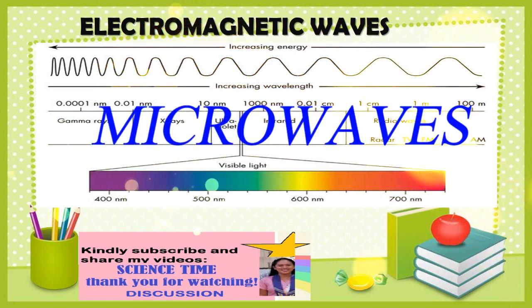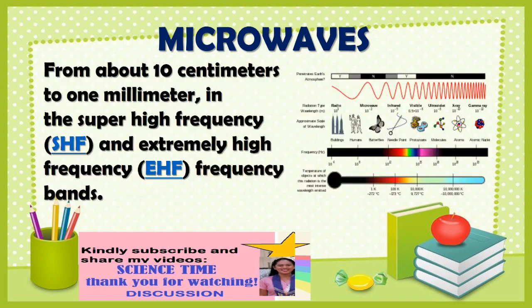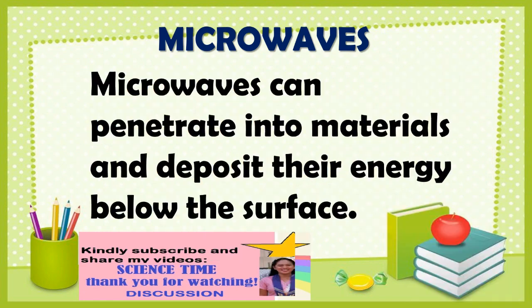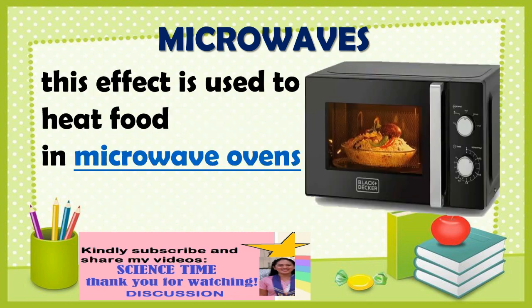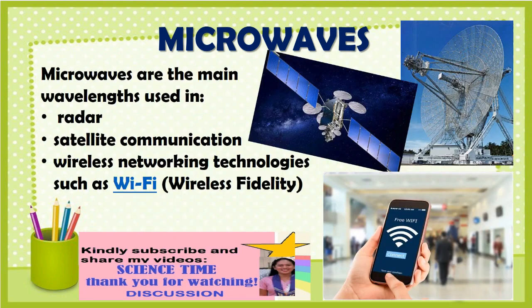Next is microwaves. Microwaves have smaller wavelengths than radio waves, from about 10 centimeters to 1 millimeter in the super high frequency and extremely high frequency band. They are used in satellite communications, radar, television transmission, and cooking. Microwaves can penetrate into materials and deposit their energy below the surface. This effect is used to heat food in microwave ovens and for industrial heating and medical diathermy. Microwaves are the main wavelengths used in radar and are used for satellite communication and wireless networking technologies such as Wi-Fi.